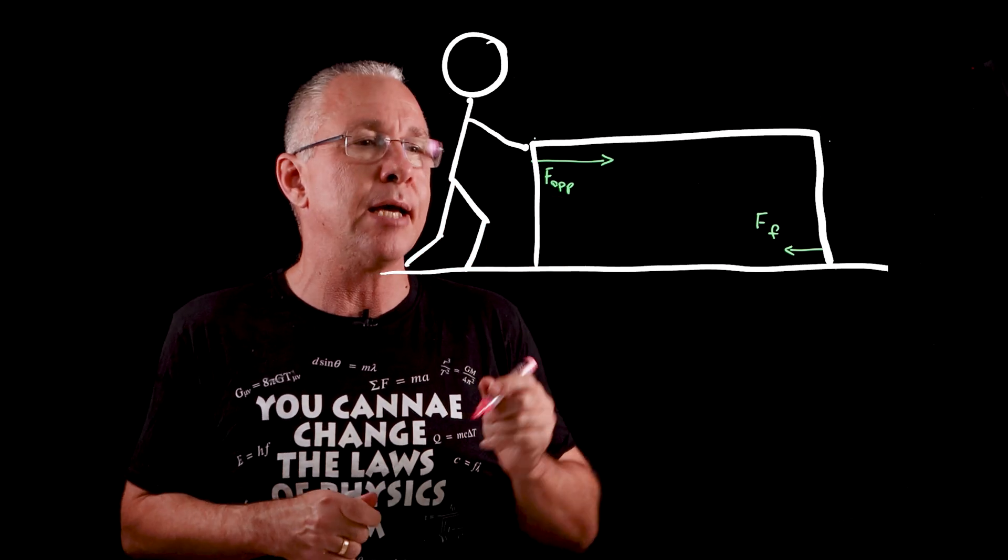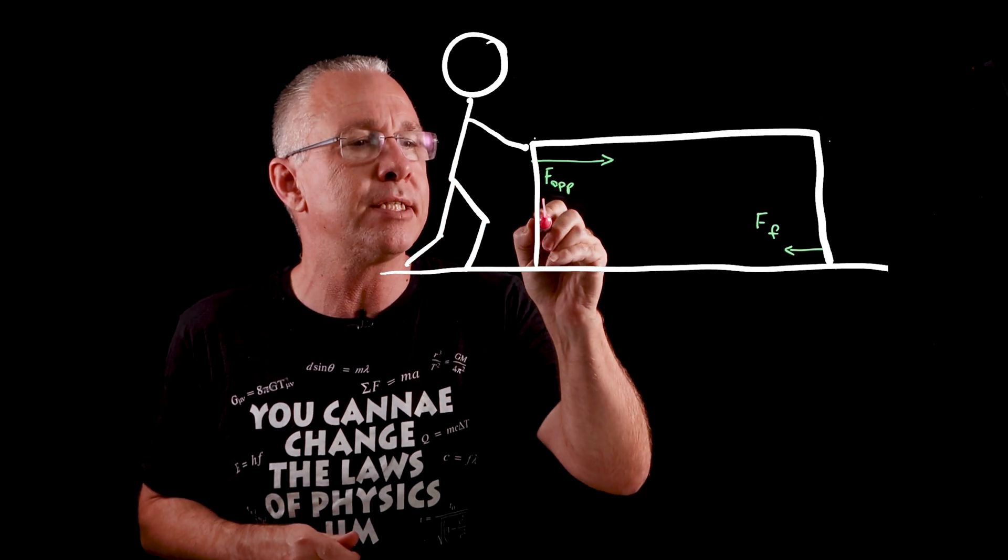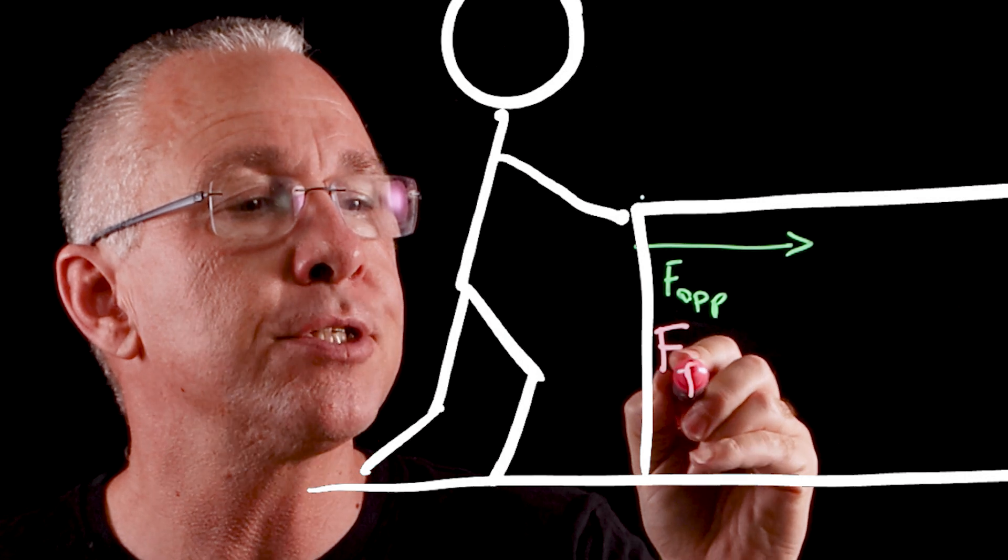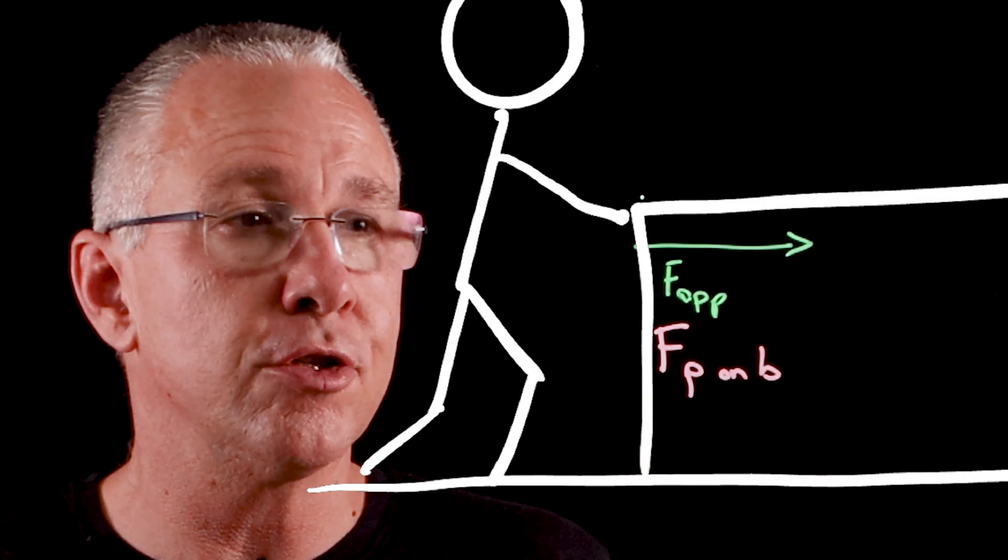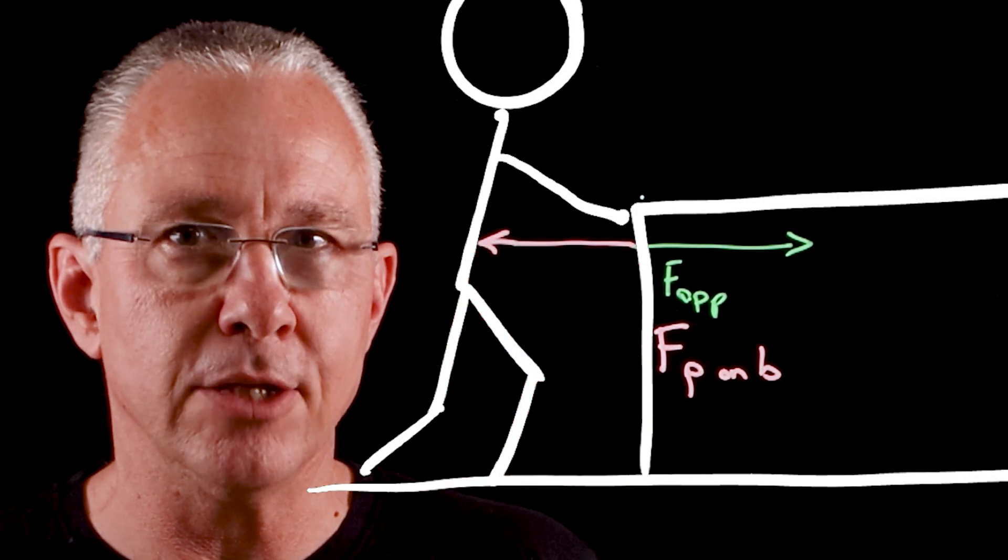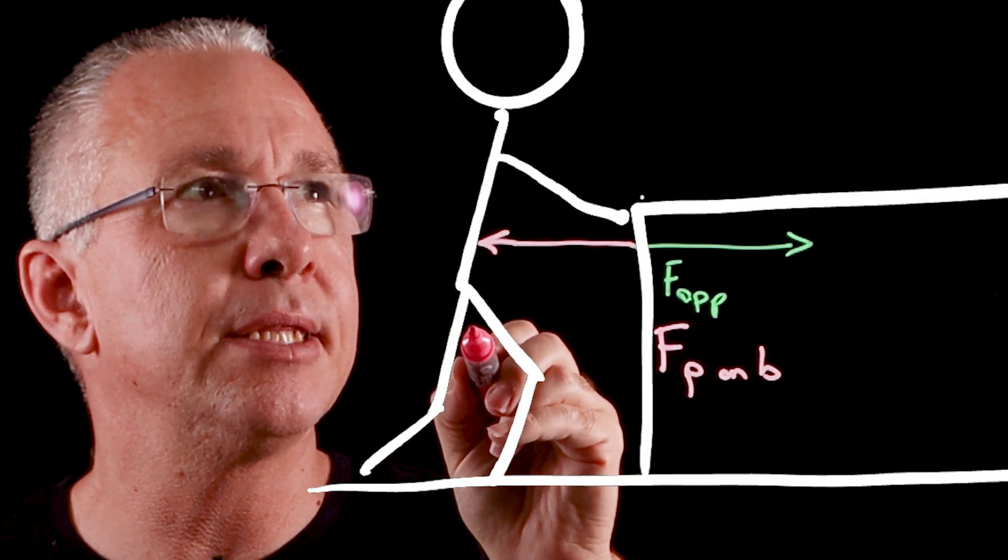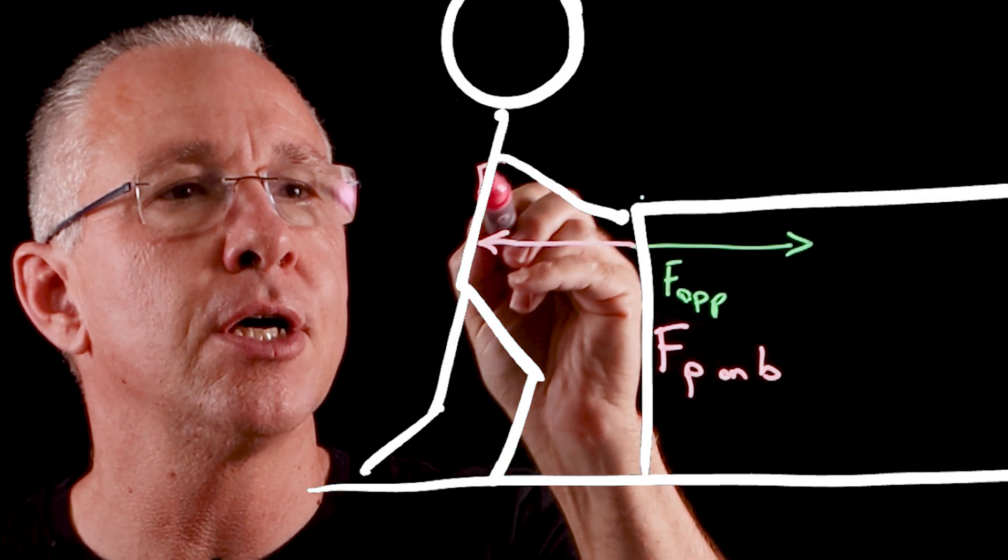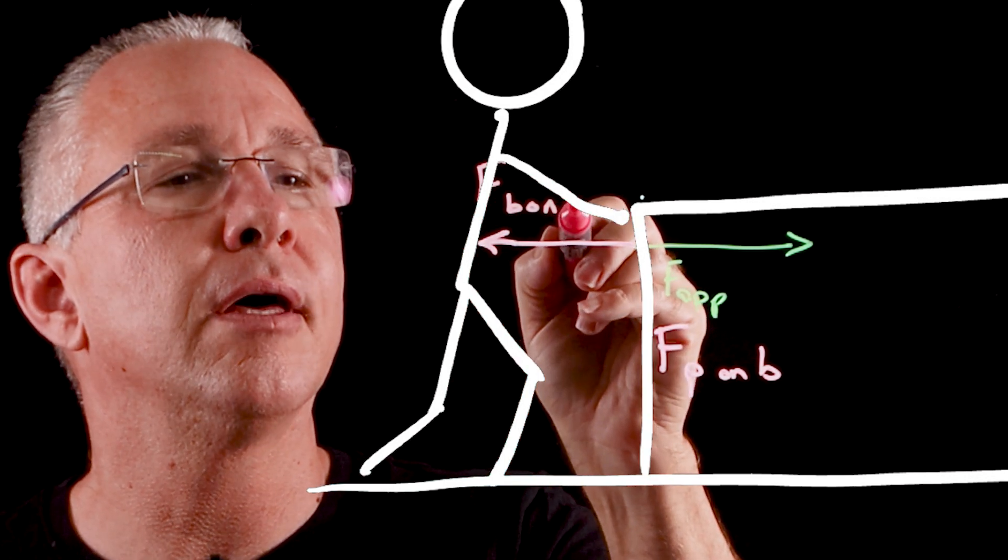So in this example this applied force can be simply written as the force of the person onto the box. What Newton's third law says is there is another force that is the same magnitude opposite direction but this is now the force of the box on the person.